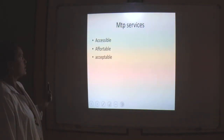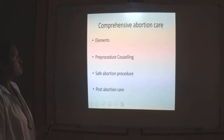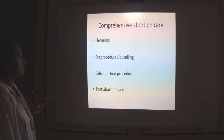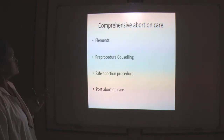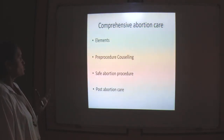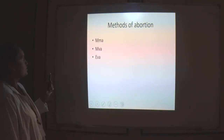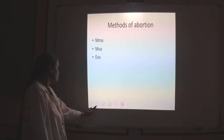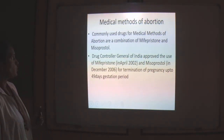MTP service should be accessible, affordable, and acceptable. The purpose of comprehensive abortion care is to reduce unsafe abortion because all patients cannot approach tertiary centers for MTP. At the peripheral level, comprehensive abortion care is provided to women, which contains three elements: pre-procedure counseling, safe abortion procedure, and post-abortion care. Methods of abortion include the medical method of abortion, manual vacuum aspiration, and electronic vacuum aspiration.